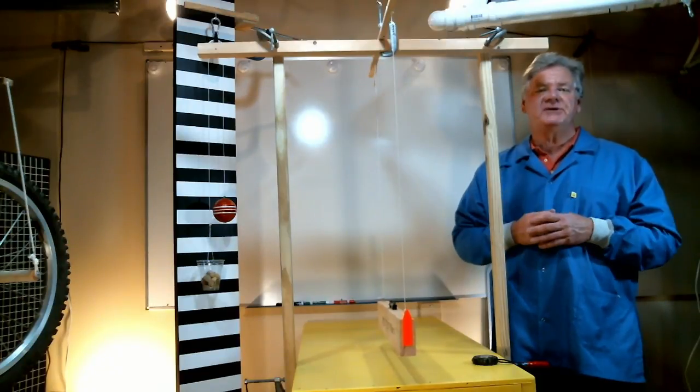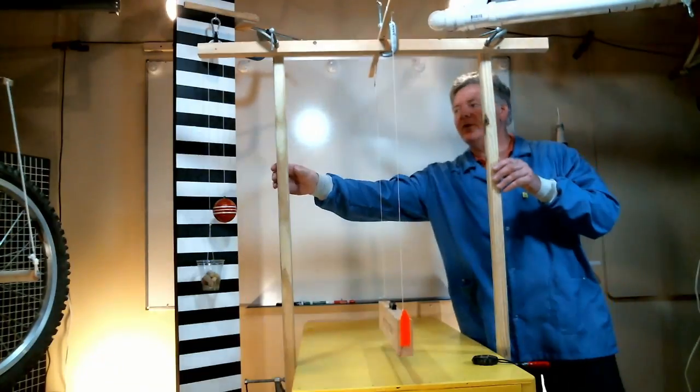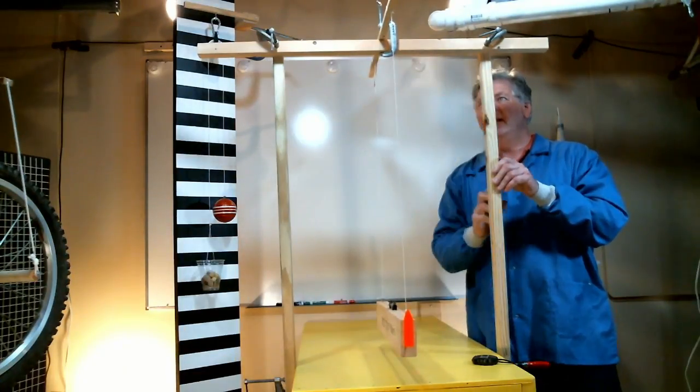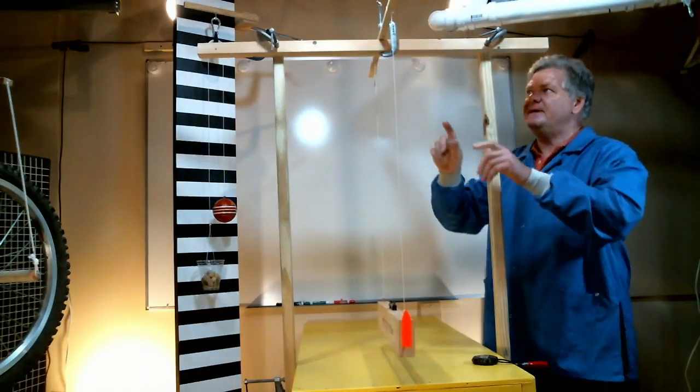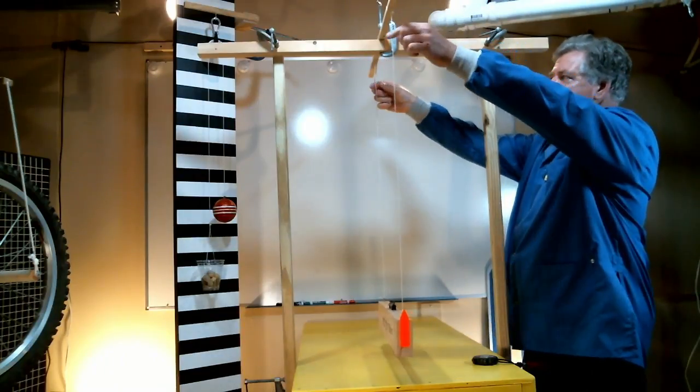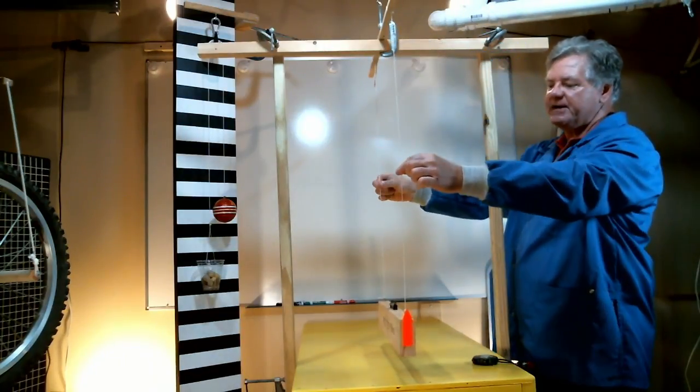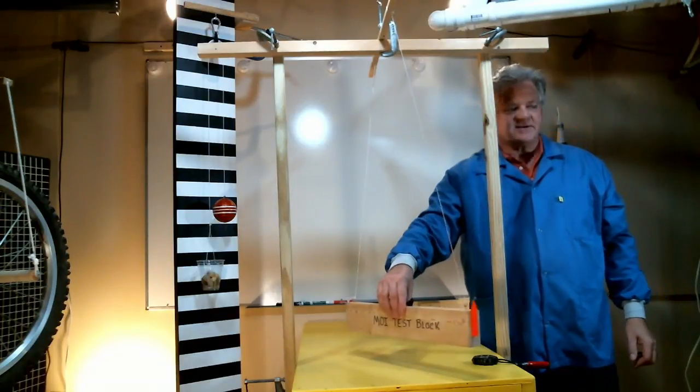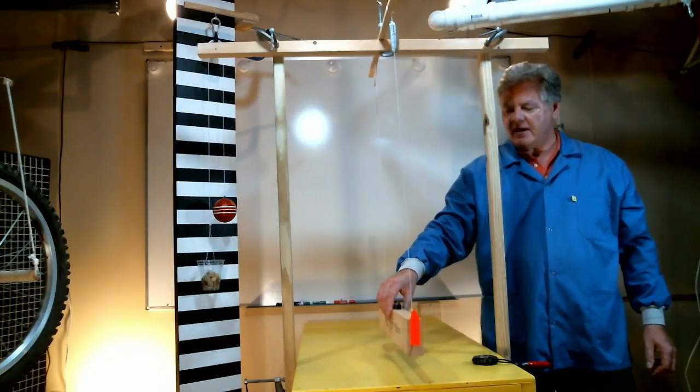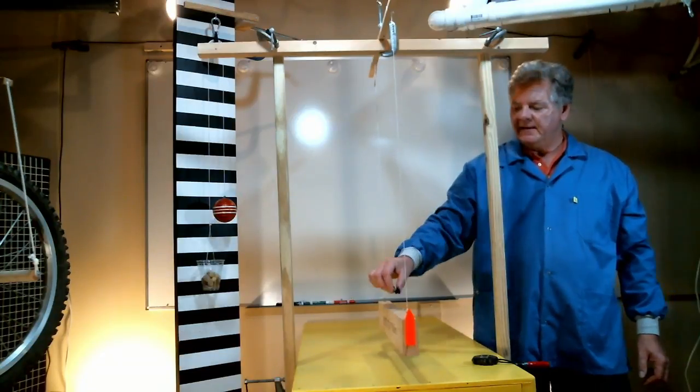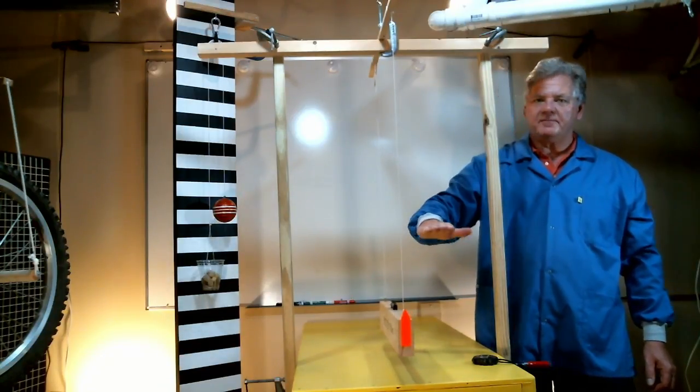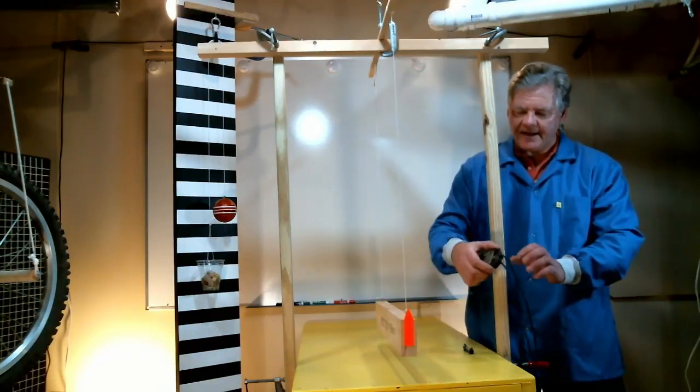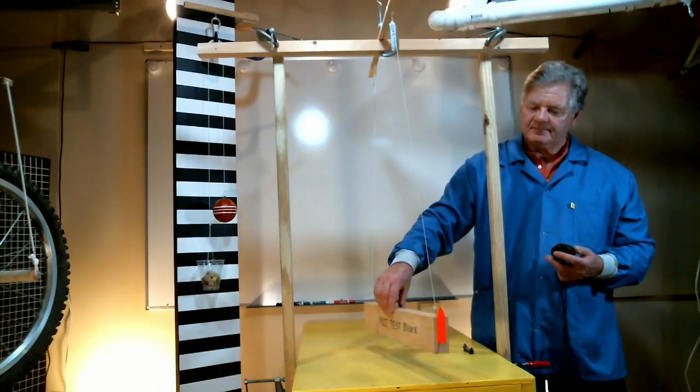Here's my bifilar pendulum setup. I've got two vertical members clamped to my table and a cross beam. And at 90 degrees to this cross beam I've got another smaller beam which I've attached my two strings to. These are the suspension strings going down to the test article. And you can see the test article here if I turn it sideways. Now I've got a small bubble level to make sure my object is level for testing.